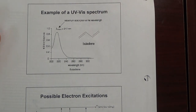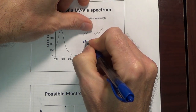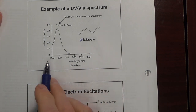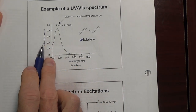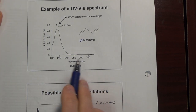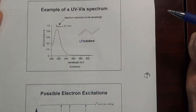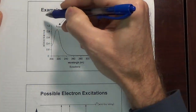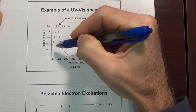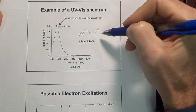Here's an example of a UV-Vis spectrum of 1,3-butadiene. We have absorbance on one axis — arbitrary units 0 to 1 — and wavelength on the other axis. It's quite a simple spectrum. With IR, we have many peaks and they come down from the top; with UV-Vis, the peaks come from the baseline at the bottom and go up. As we go up, that represents absorbance — we're absorbing light.